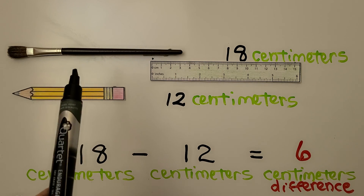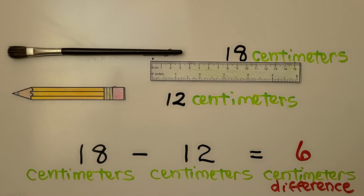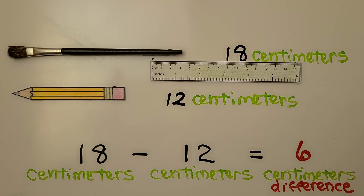That's 15 and 3 more: 15, 16, 17, 18. We know the paintbrush is 18 centimeters.